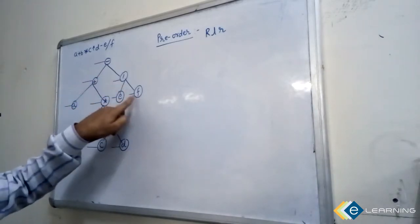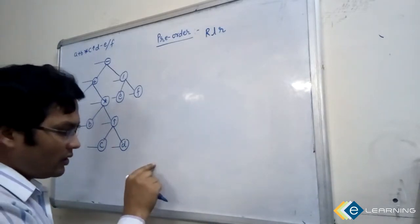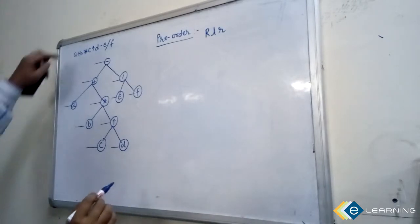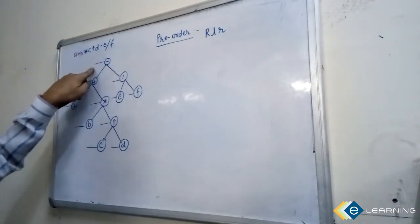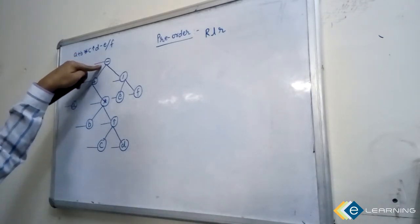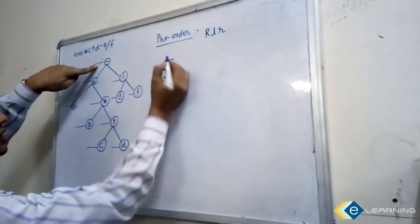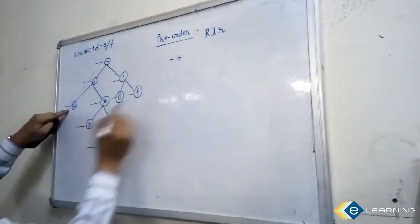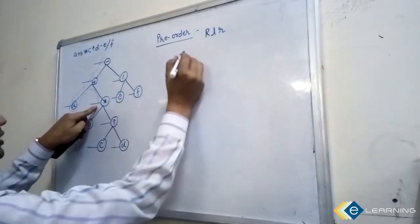Pre-order means mark the line before the node - pre of this node. After marking, traverse from the root and whenever this line is intersecting, write it down. Start from here: this line is intersecting now - this is minus, now this plus is intersecting, plus, now A.